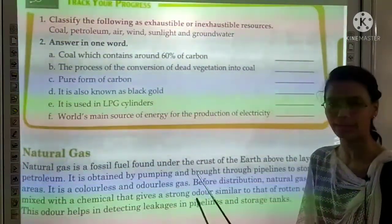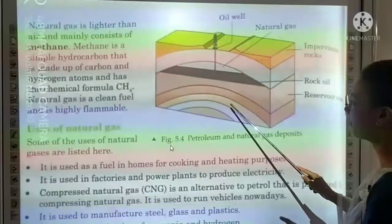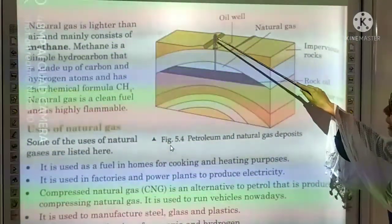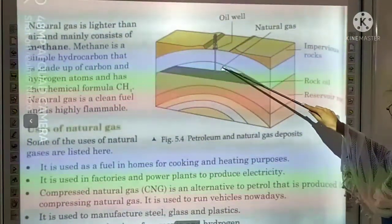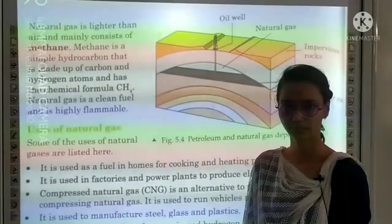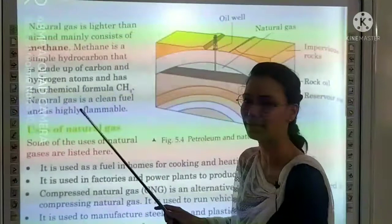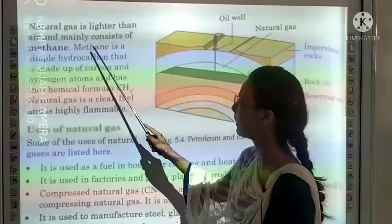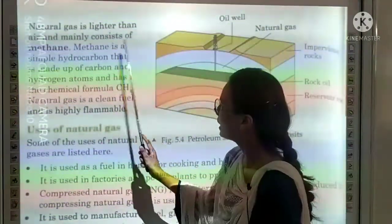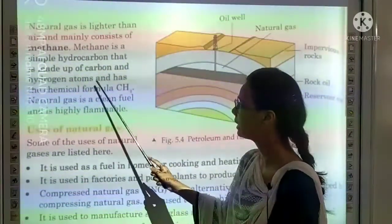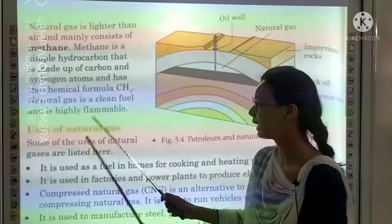We put a pipeline drilling through the oil well. Natural gas is lighter than air and mainly consists of methane. Methane is a simple hydrocarbon made up of carbon and hydrogen atoms with the chemical formula CH4. Natural gas is a clean fuel and is highly flammable.